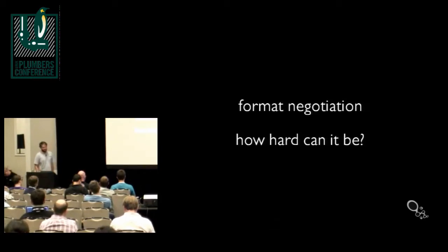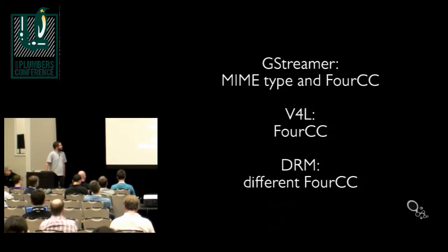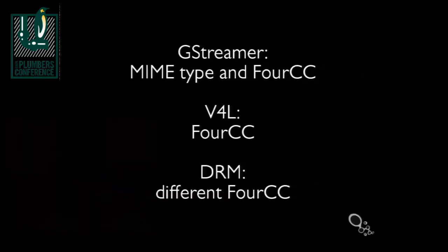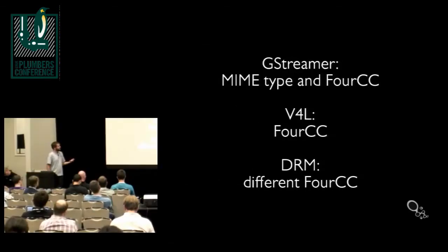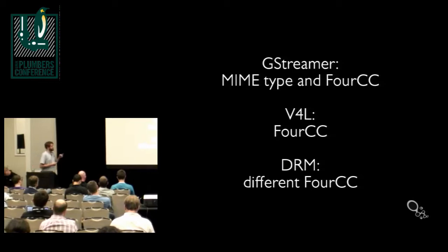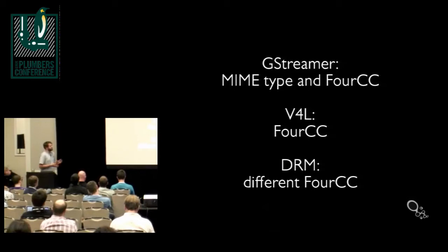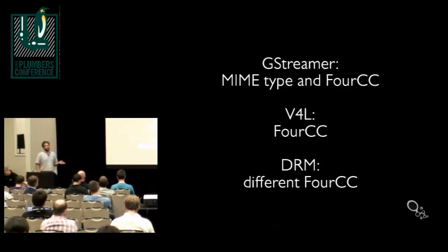But our typical pipeline will involve sourcing from V4L, going through GStreamer, and going to DRM. V4L gives you a different set of FourCC codes. There is some overlap but that seems to be more coincidence than anything. GStreamer gives you an ASCII MIME type as well as a FourCC.